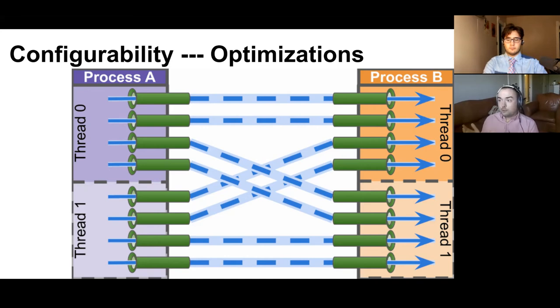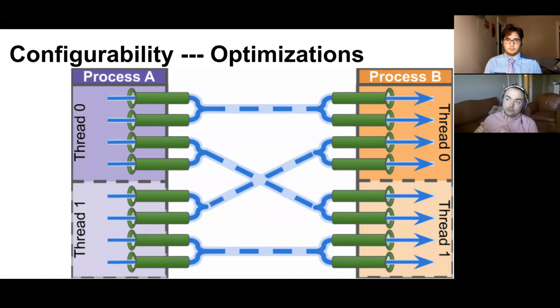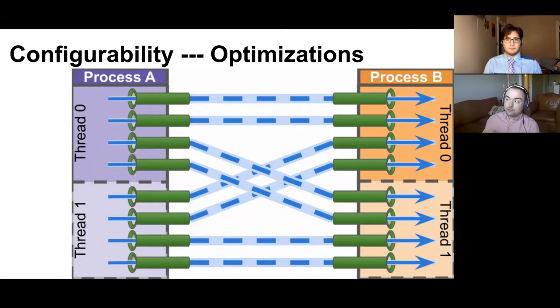For example, one of the optimizations that's built into an implementation for inter-process communication available through the library is consolidating messages that are going between the same two processes. So instead of having to send two MPI messages between thread zero on process A and thread zero on process B, under the hood, we can detect all of the communication channels that are going between these two processes and consolidate this into fewer underlying calls to the MPI runtime.